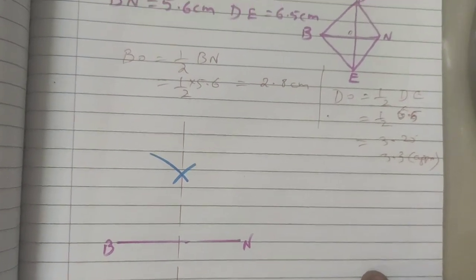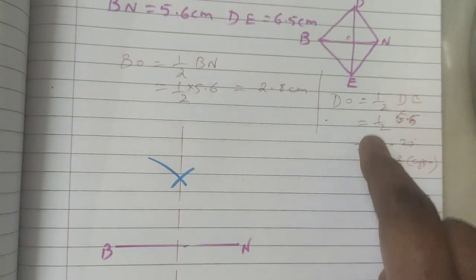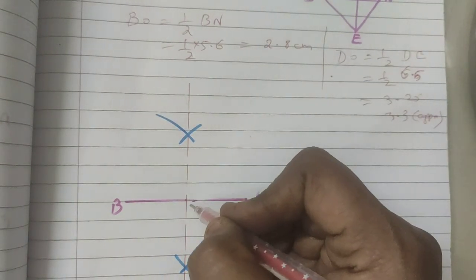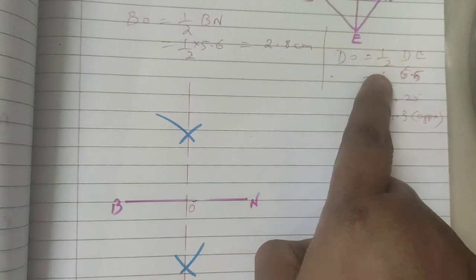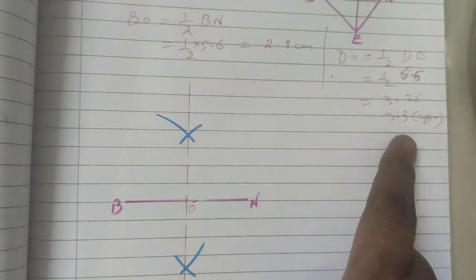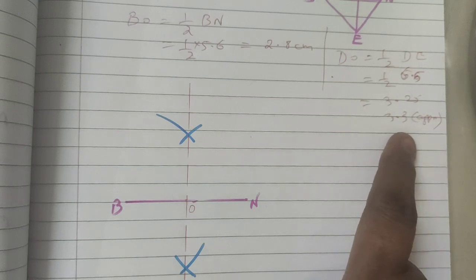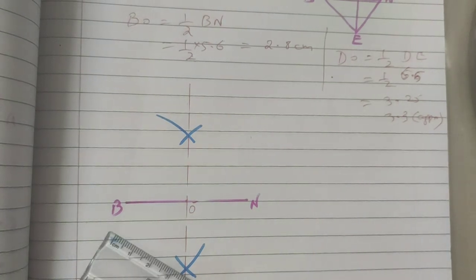To get this DE measurement, this is the center O. Consider as O. So DO should be half of DE. How much? 3.2 cm, approximately 3.3 cm. We can take in our compass.